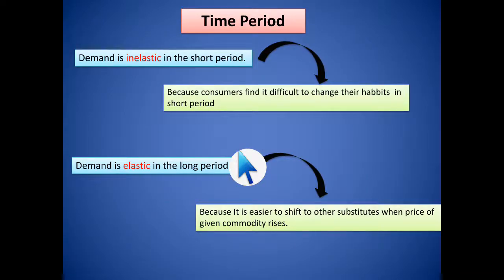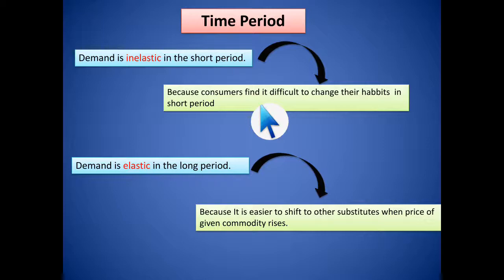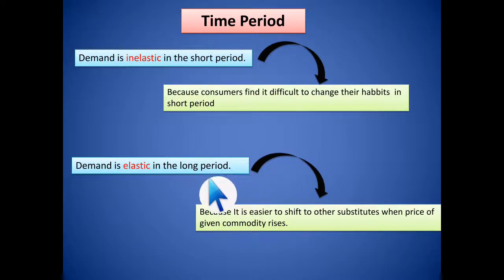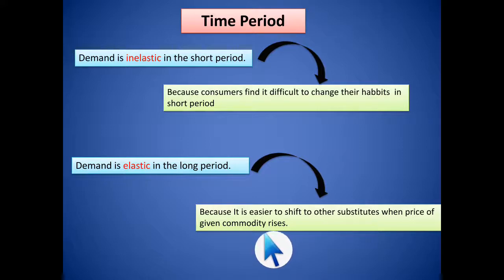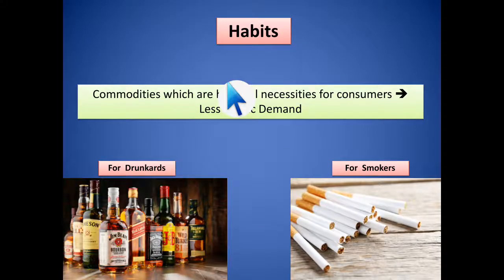The eighth factor is time period. For the short period, demand will be inelastic; for the long period, it will be elastic. In the short period, consumers find it difficult to change their habits or consumption behavior — for example, they still buy food grains regardless of price. But in the long period, consumers have proper time to shift to substitutes when prices rise, making demand elastic. With more time available, it is easier to shift; with less time, consumers cannot adapt, so demand remains inelastic.